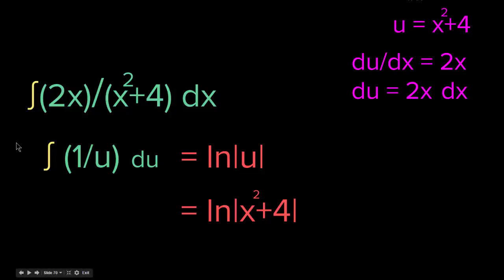Substituting back, the result is ln(x² + 4), since u = x² + 4. So the integral of 2x / (x² + 4) dx equals ln(x² + 4). We solved it by u-substitution: we identified the function and its derivative, substituted u and du, solved for u, and substituted the x expression back.